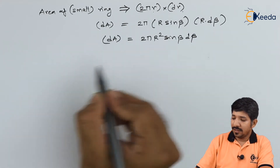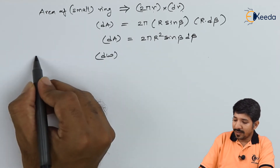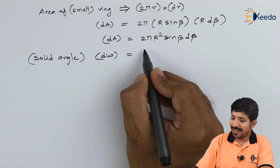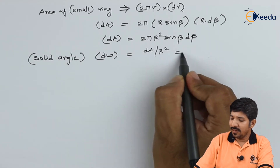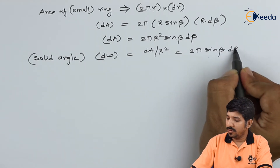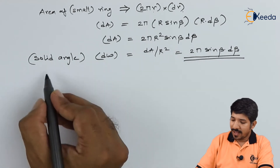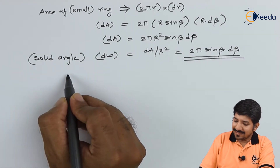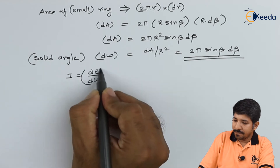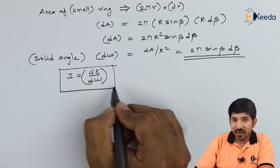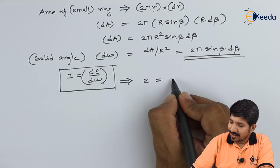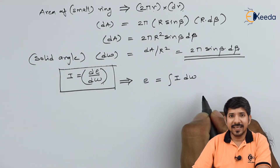Now, the solid angle D-omega for a given elemental area dA is given as dA over R-squared, which simplifies to 2π·sinβ·dβ — the R-squared cancels out. And we know that the intensity of radiation I is given as dE over d-omega. So from the definition of intensity of radiation, E equals the integral of I times d-omega.